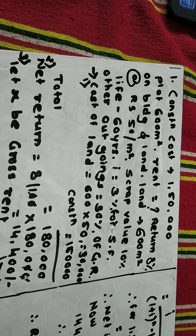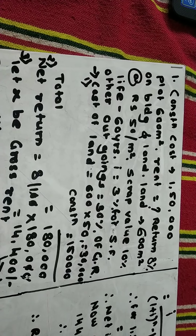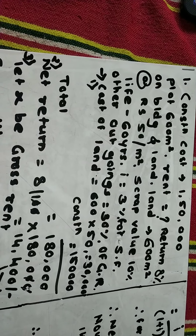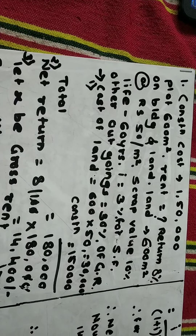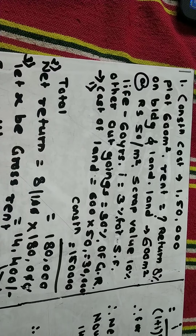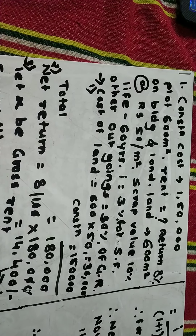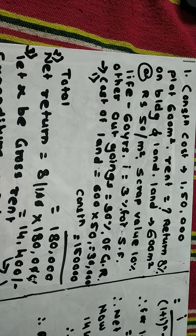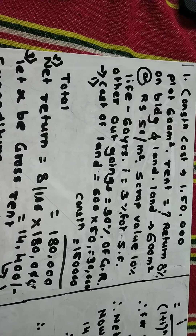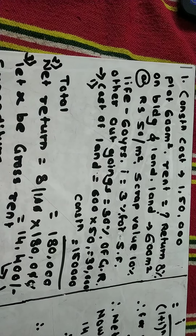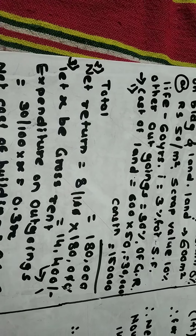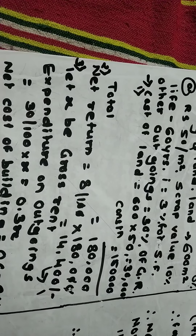Step 2: Find the net return. They have given the desired return as 8 percent on the total investment — that is, on both the construction cost and the land cost. We have already found the total to be rupees 1 lakh 80,000, so 8 percent of rupees 1 lakh 80,000 equals rupees 14,400. This is Equation 1.